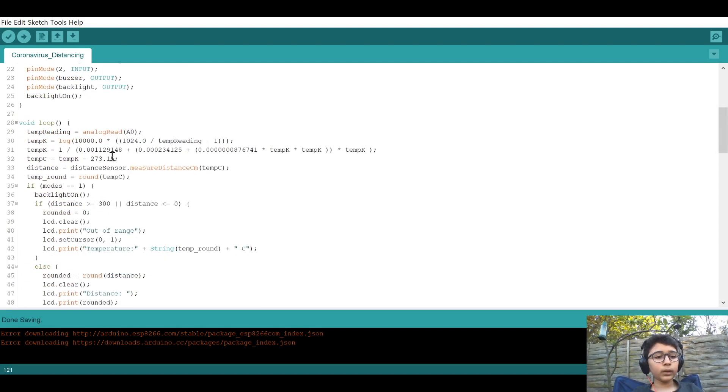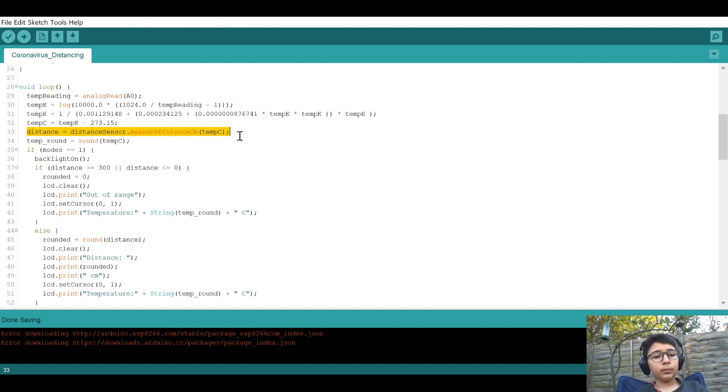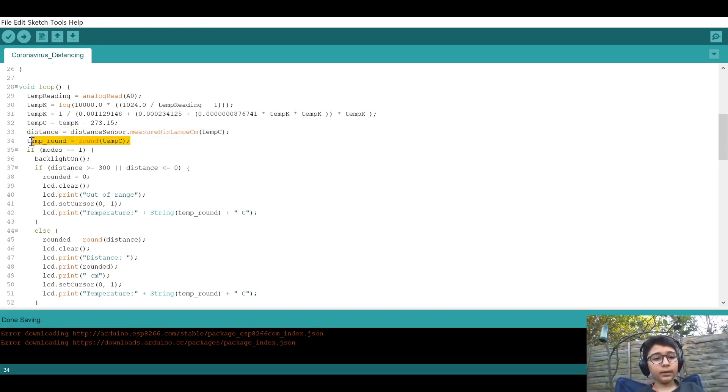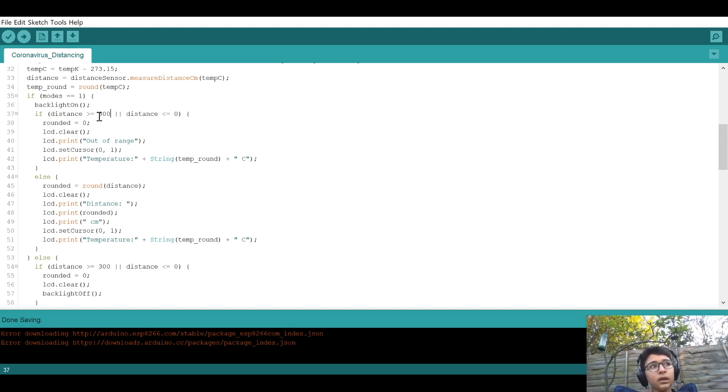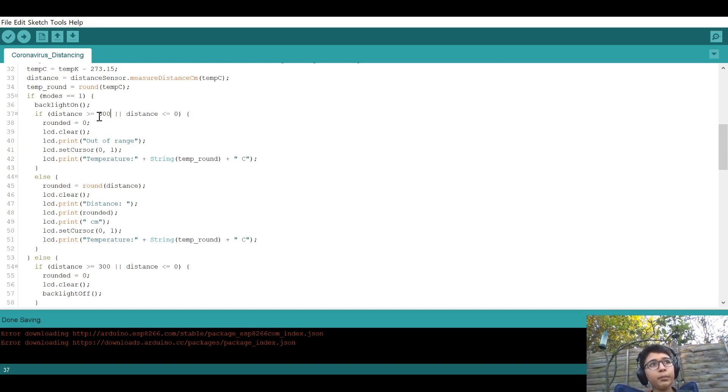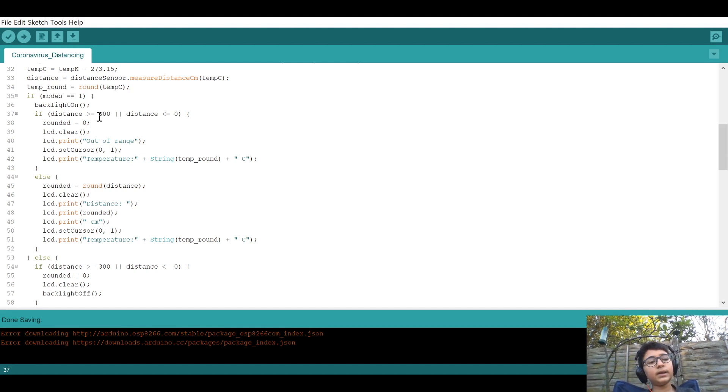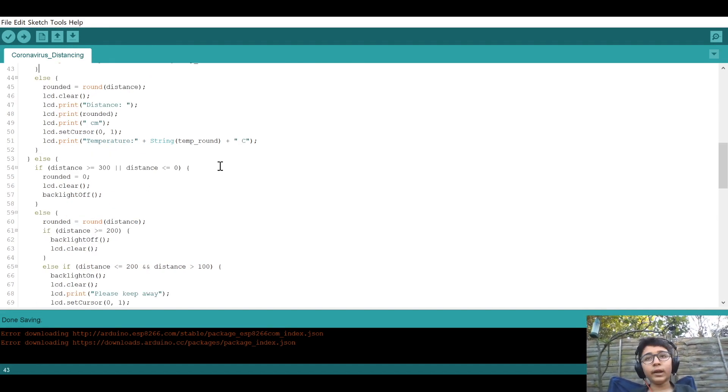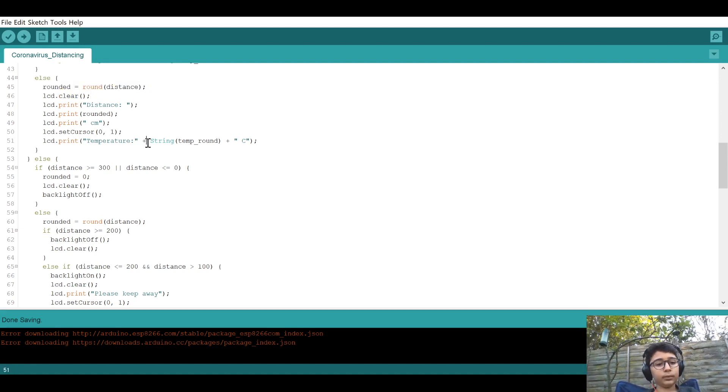So then we get the temperature reading. We use the temperature to measure the distance. We round the temperature and then we check if the distance is more than three meters or if it's less than zero centimeters. If that is the case, it means the sensor is out of range. If the distance is not out of range, it shows the distance on the top and the rounded temperature.